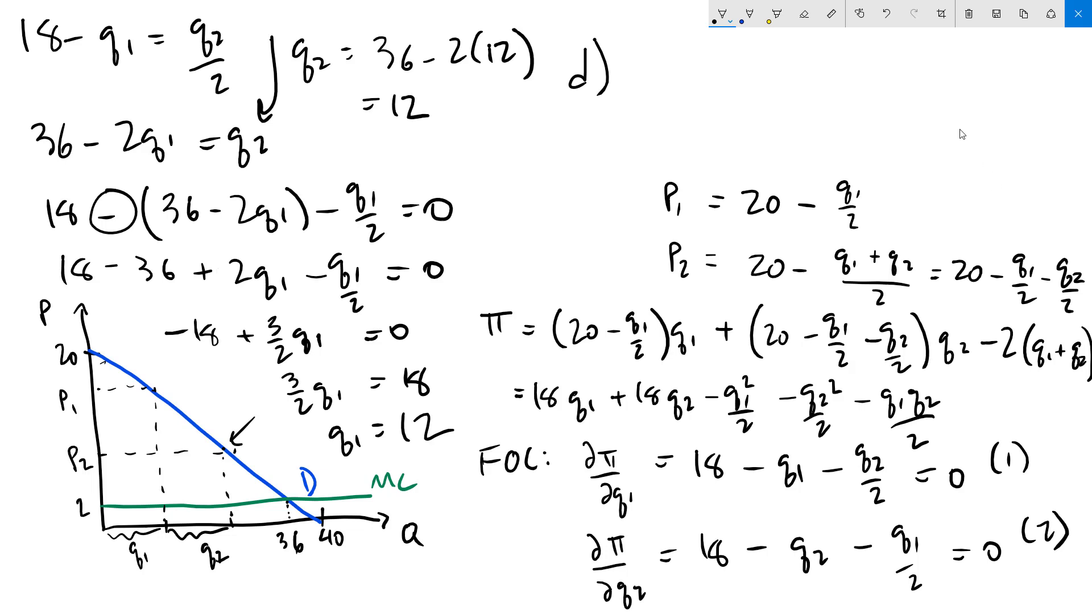Our final task is to figure out what the two prices are and we can use our two price equations right here. P1 is 20 minus Q1 over 2 which is 14. P2 is 20 minus Q1 over 2 that's 12 over 2 minus Q2 over 2 which is 8.